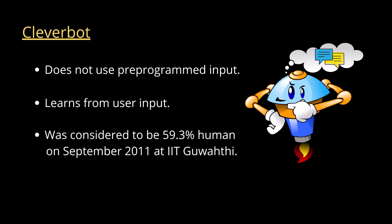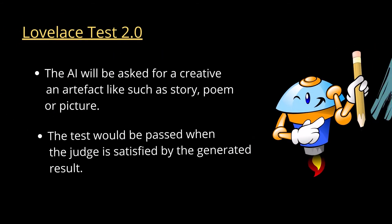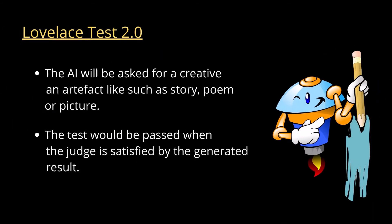Some chatbots also show previous conversations to improve themselves over time. The Turing test cannot be stated as a perfect test for measuring machine intelligence as it involves trickery. As technology advanced, different tests came into use to incorporate a wider field of expertise. One such test is the Lovelace test 2.0, which gauges a computer's ability to create art.